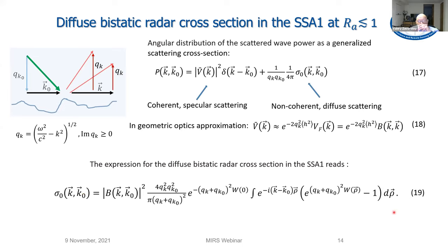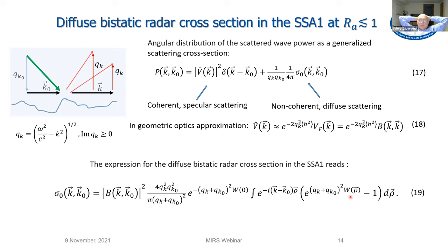Coherent reflection is described by the average reflection coefficient V in the specular direction; in the geometric optics approximation it looks like Equation 18, which also follows from the Kirchhoff approximation, since both methods produce the same expression for scattered field in the specular direction. The expression for the dimensionless diffuse scattering cross section in SSA1 is shown in Equation 19. Functions W and B have been introduced before. Equation 19 contains the same integral as the bistatic cross section from the Kirchhoff approximation, but the pre-integral polarization factor B differs. The key difference is that W in Equation 19 is not assumed to be slowly varying on the scale of wavelengths and may contain small-scale components responsible for Bragg scattering.